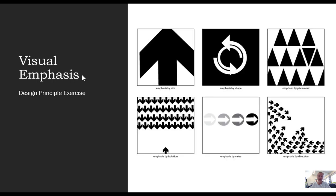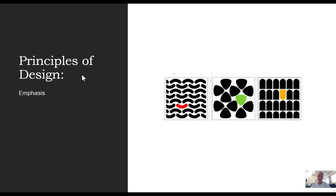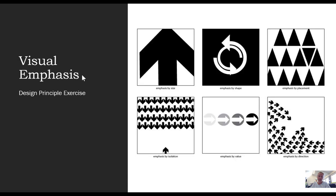So along with our principle of design for emphasis, we can elaborate by trying to put this into practice. Here you can see six examples of using emphasis. And these are being applied in different areas. The first one by size, the second by shape, by placement, isolation, value, and direction.